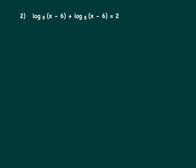Number 2 is a little different than number 1 because we have logs on the left-hand side of the equation, but not the right-hand side. Even if we subtracted one of these log terms to move it to the right-hand side, we would have 2 minus a log expression — we wouldn't be able to get one single log term on each side to cancel. So we have to go about this using a different technique.